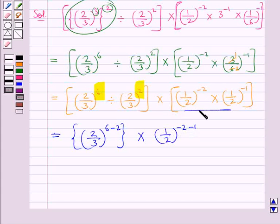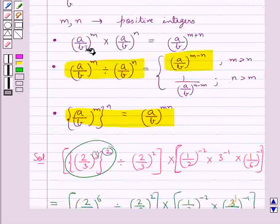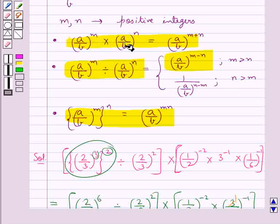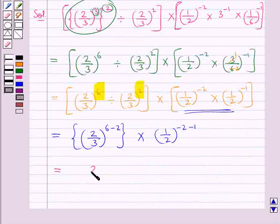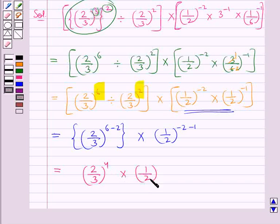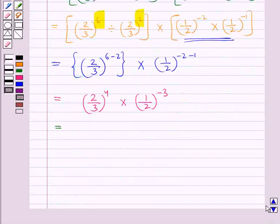So here we get 2 upon 3 whole to the power 6 minus 2, and this is multiplied by 1 upon 2 whole to the power minus 2 minus 1. For the multiplication of these two rational numbers, we used the law that a upon b to the power m multiplied by a upon b to the power n equals a upon b to the power m plus n — so we added the exponents of the rational number 1 upon 2. This gives us 2 upon 3 whole to the power 4, multiplied by 1 upon 2 whole to the power minus 3.